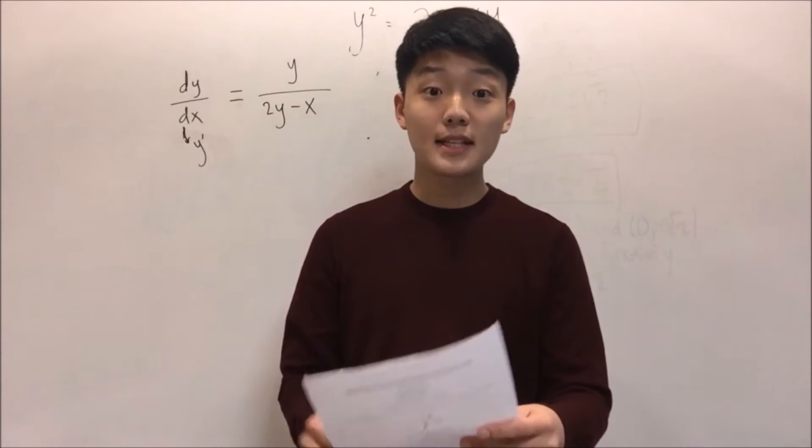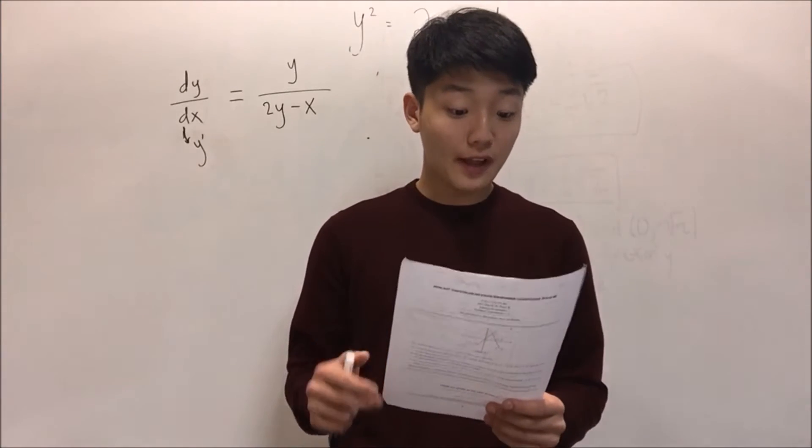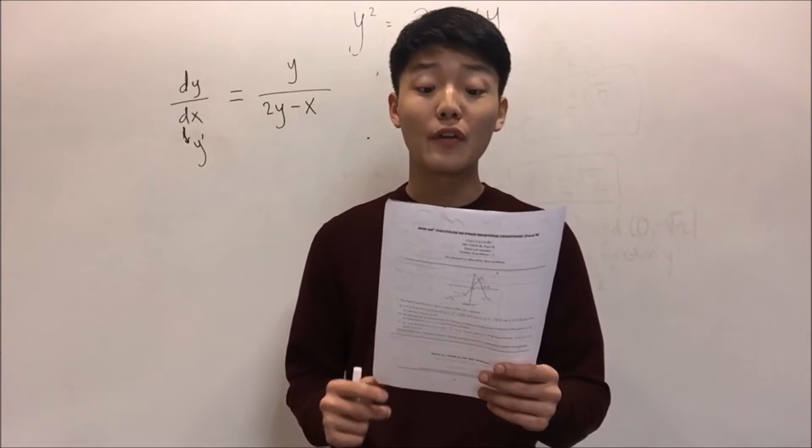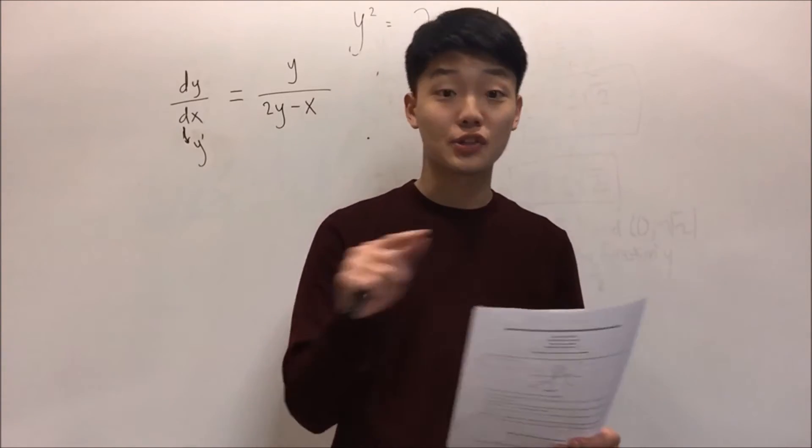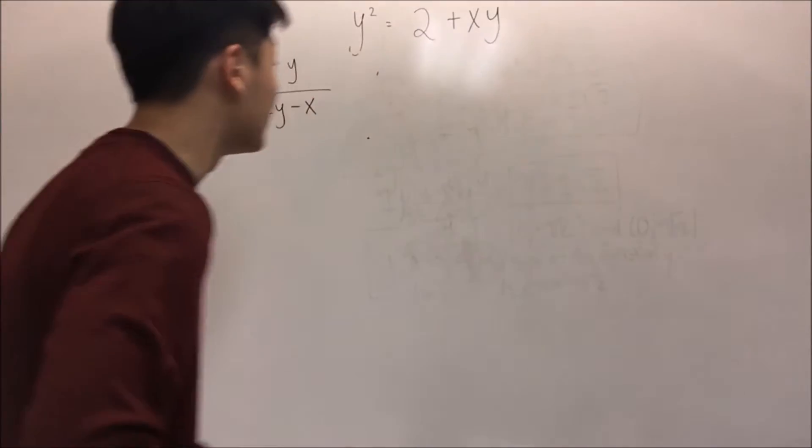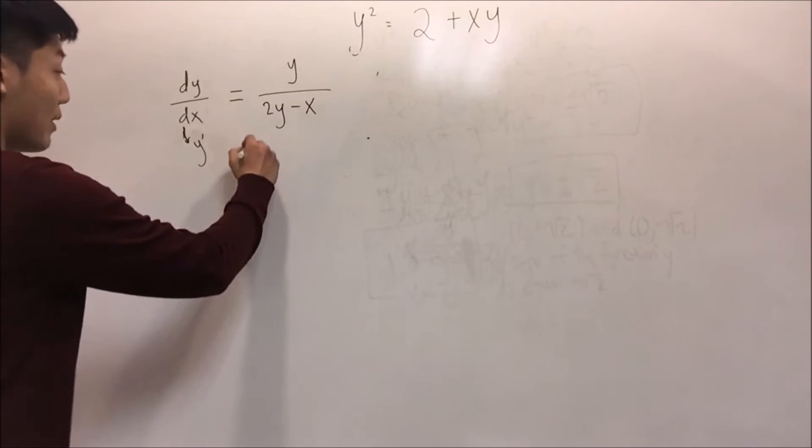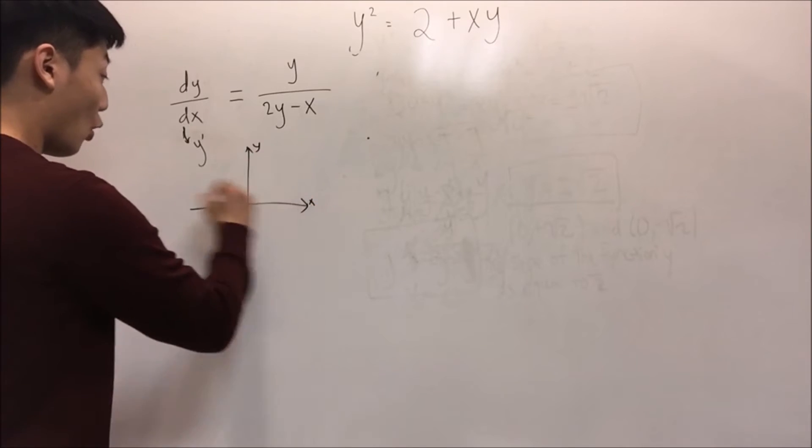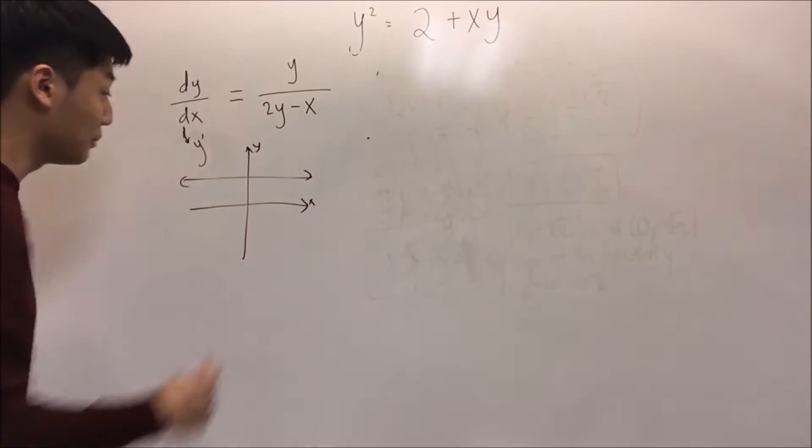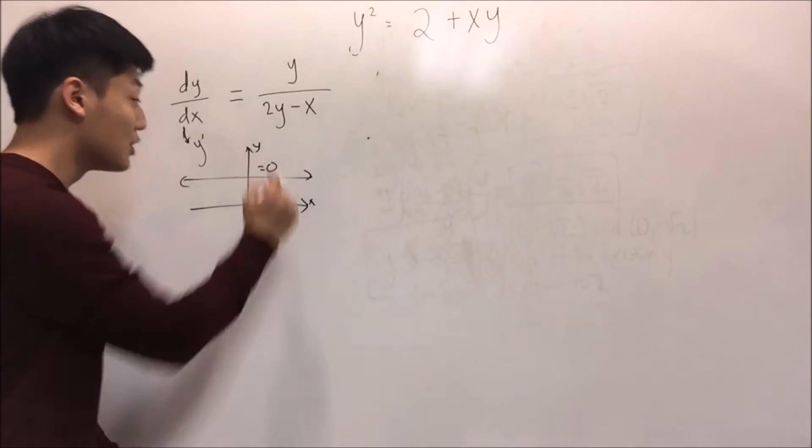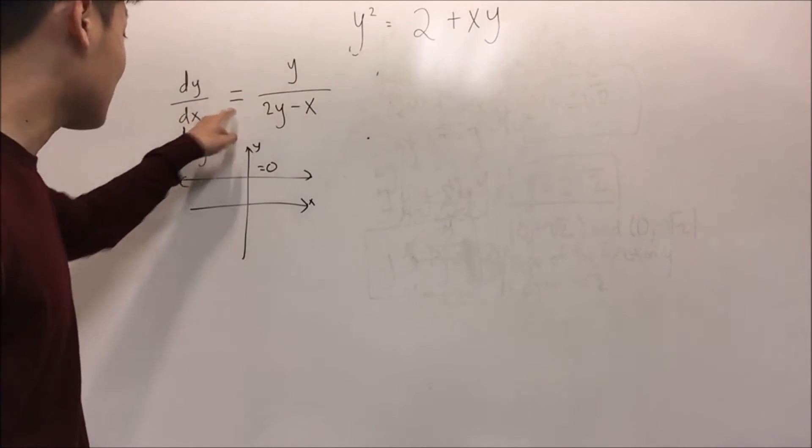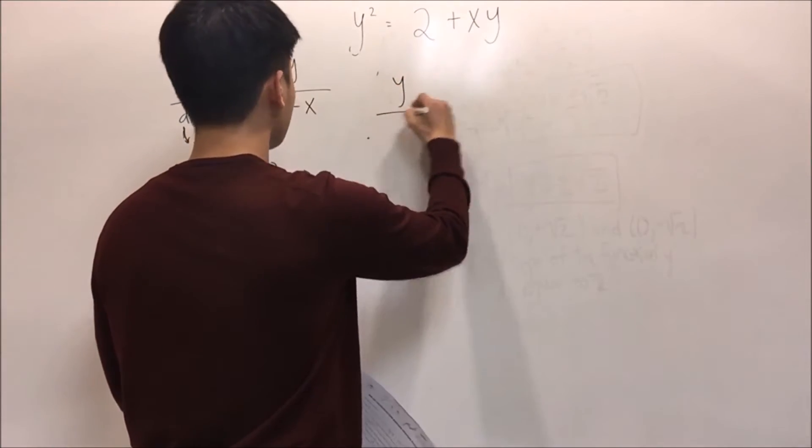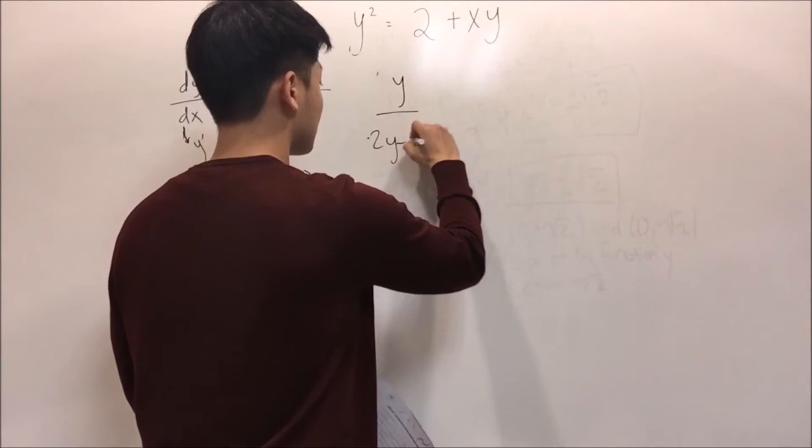Part C says: show that there are no points on coordinates (x, y) on the curve where the line tangent to the curve is horizontal. Before we begin, let's make sure when the graph is horizontal, the slope is zero. So we can say dy/dx or y prime is zero. y over 2y minus x equals zero.